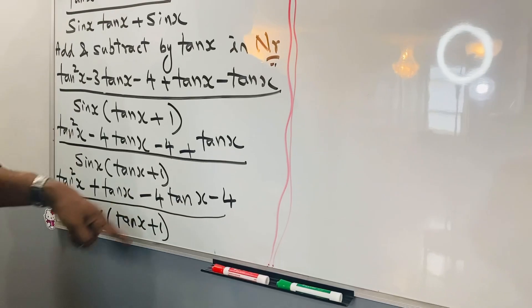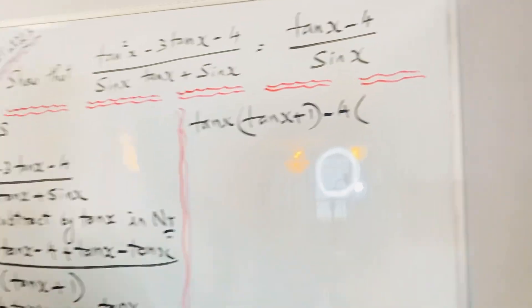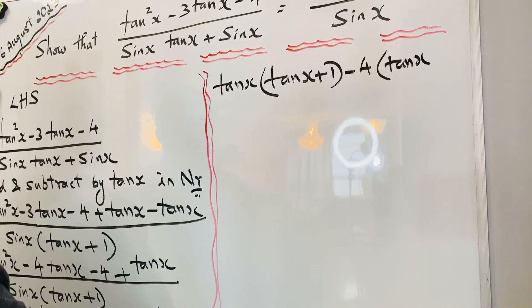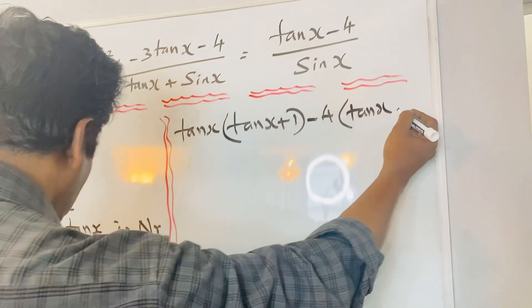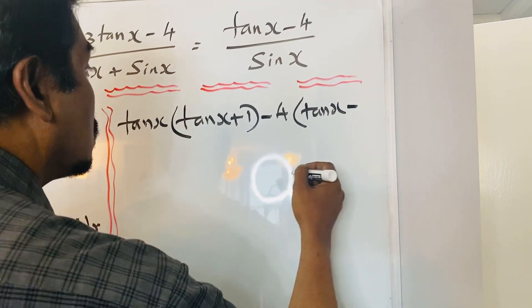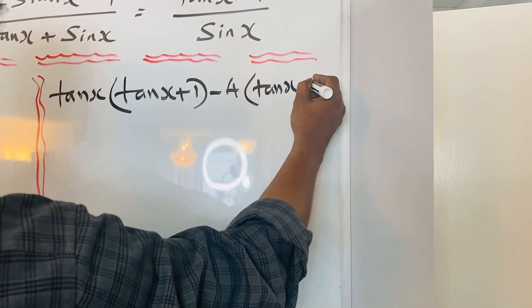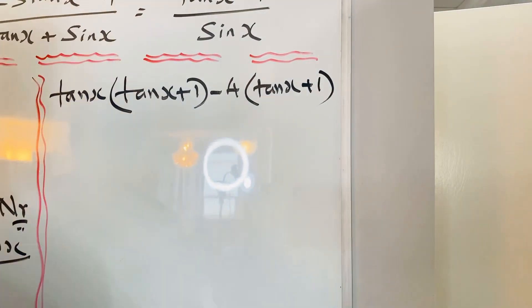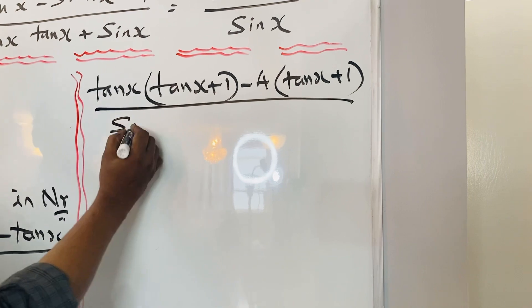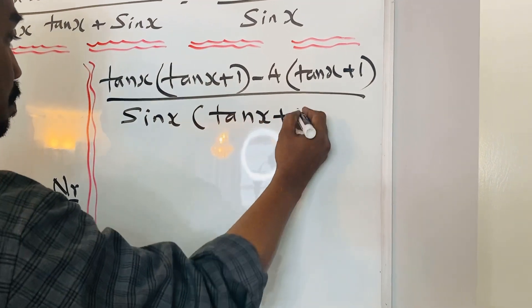Now here I will take the -4 outside. Negative 4 outside. So what will be inside? Tanx. Just -4 times tanx, -4tanx. We need a plus, so minus. So we need -4, so it will be +1. -4 times +1, -4 divided by sinx(tanx + 1).